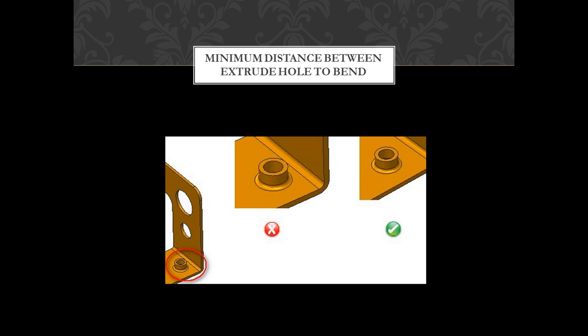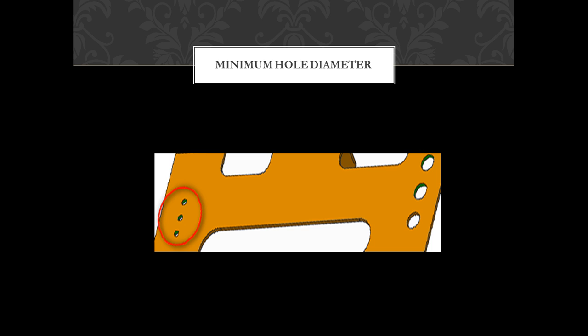Minimum hole diameter: The diameter of holes in sheet metal parts should not be very small. Small holes are created by piercing operations, and manufacturing small holes requires small-size punches. Small hole sizes in sheet metal require small-size punching tools which may lead to breakage during operation. It is recommended that the diameter of the hole should be equal to or more than the thickness of the sheet metal.